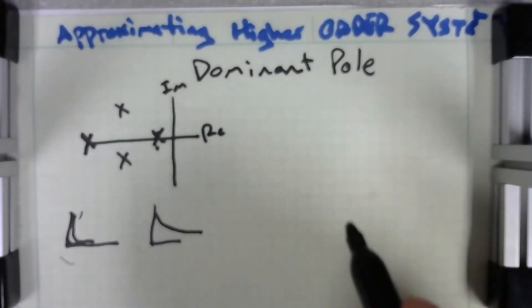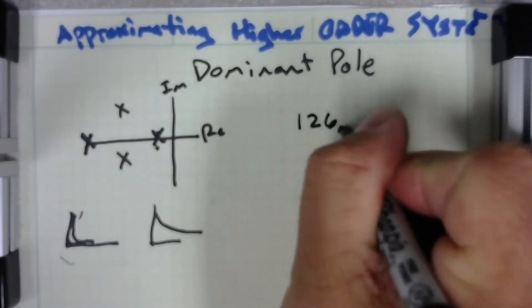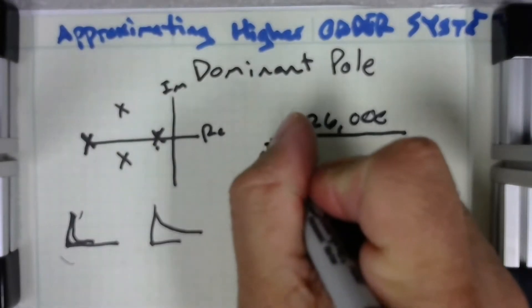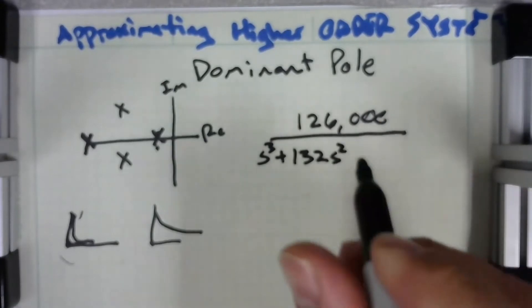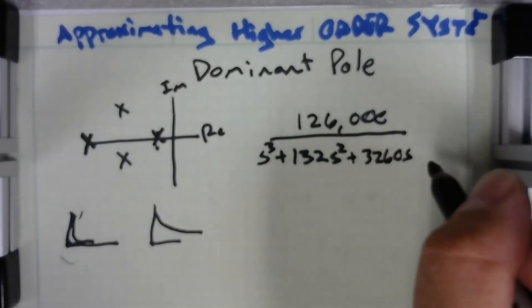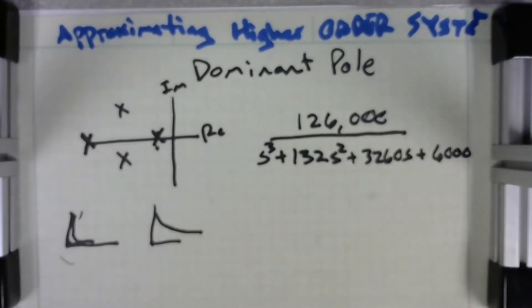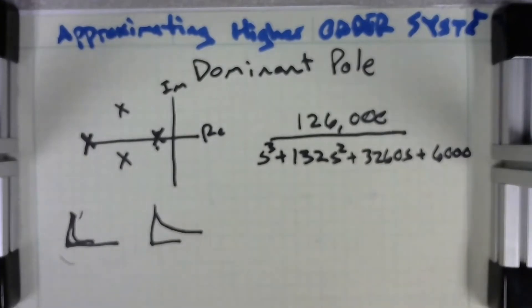We can approximate the system to be like this. Okay, so that's what we want to do. In order to do that we need to have ourselves a transfer function. I have one here: it's 126,000 over s cubed plus 132 s squared plus 32,060 s plus 6,000. You look at that and you think, oh, that looks horrible. I do not want anything to do with that, and I agree.